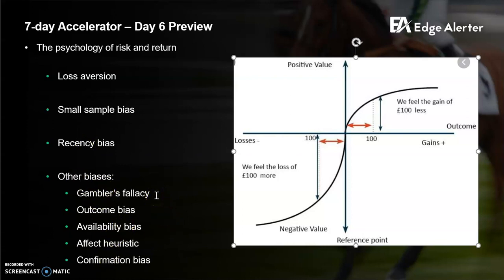The gambler's fallacy is the common thought that if there have been six heads in a row, tails is just due. That might seem silly in a coin flip, but you might think the same in a bad streak in sports — six losses in a row, are they due to win? If each case is independent, this is completely irrational. Outcome bias is almost the same as hindsight bias: all you can do is make an informed decision at the time with the information you had. You can't look back and say you should have done something differently after the fact.